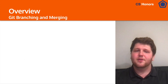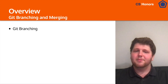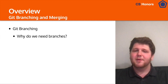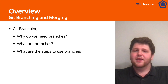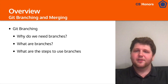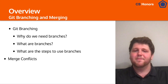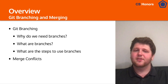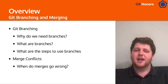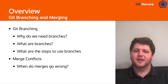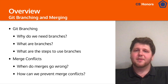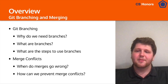Now let's talk about what we're going to do today. We're going to talk about Git branching — specifically why we need branches, what they are, and the steps we can go through to use them. We'll also talk about merge conflicts, which is part of branching and basically what happens when merges go wrong, when you take two branches and try to make them one again. We'll also talk about how you can potentially prevent them.